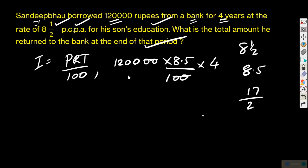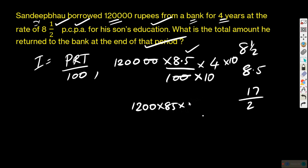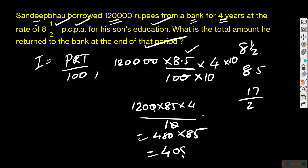Calculating: 1,20,000 into 8.5 into 4 upon 100. To remove the decimal, multiply numerator and denominator by 10, giving 1,200 into 85 into 4 upon 10, which simplifies to 120 into 85 into 4, and 4 into 120 equals 480 into 85, ultimately giving an answer of 40,800 rupees interest.